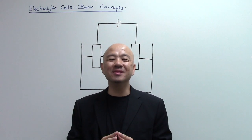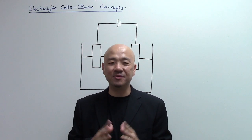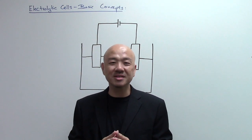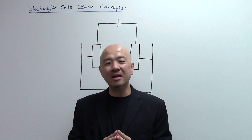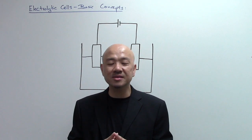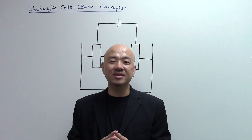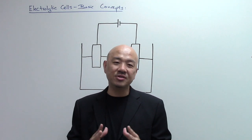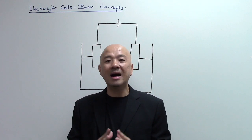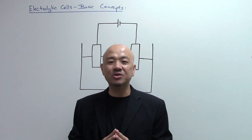Hi, this is Sean Chua. Welcome back to simplechemconcepts.com. Today in this video we're going to discuss the basic concepts regarding electrolytic cells, and I'm going to use these concepts to help you solve exam-based questions. Electrolytic cells are defined as electrochemical cells whereby non-spontaneous redox reactions occur in the presence of electrical energy. The electrical energy is used to decompose or break up a compound — this process is also known as electrolysis.